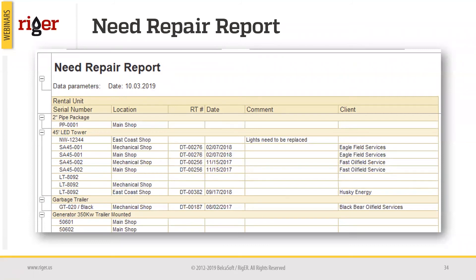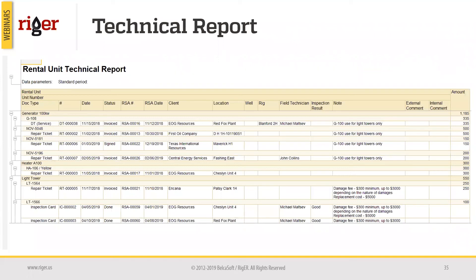The second report is the need repair report. 'Need repair' is a status of items in the system, and this report shows rental units by unit number currently in that status. Rental units are grouped by serial number and location, showing which document or rental ticket created the status, the date, any comments entered, and the client for whom the unit was used before it received the 'need repair' status. The third report is the rental unit technical report, which reflects not only repair information but also inspection cards and other actions. Information is grouped by rental unit, drilling down to the unit number.